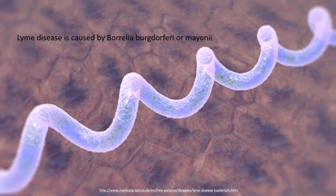Lyme disease is caused by a spiral-shaped bacteria, Borrelia burgdorferi and Borrelia mayonii. The bacteria does not cause the tick to become sick — the tick is a vector for Lyme disease. Public health science refers to animals that spread diseases without themselves becoming infected as vectors.